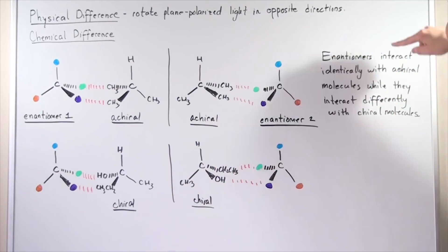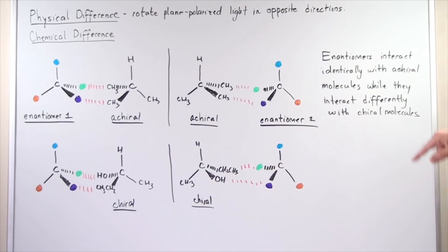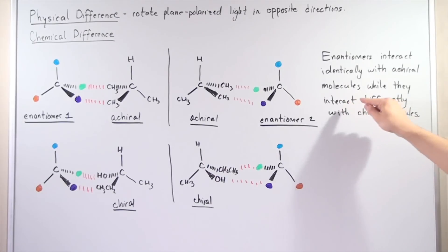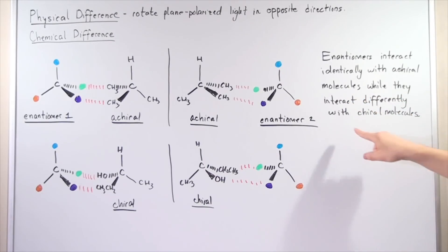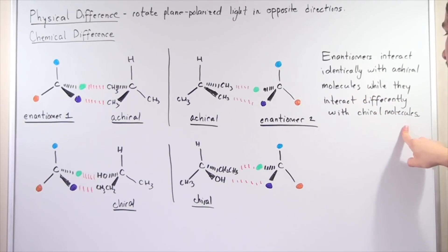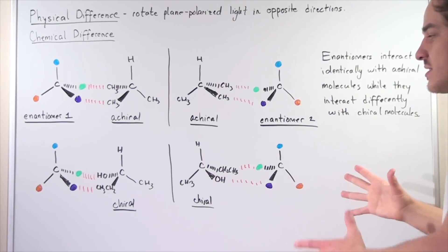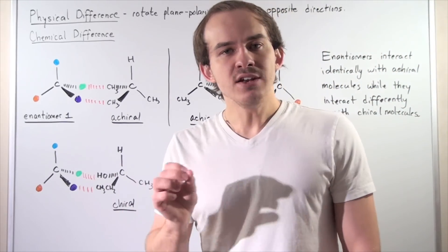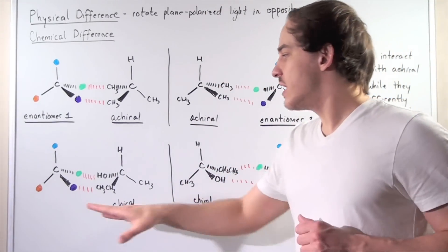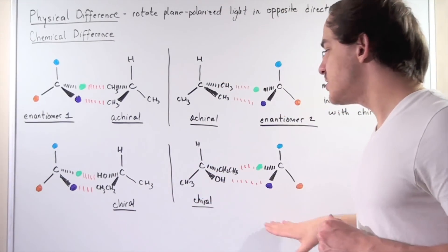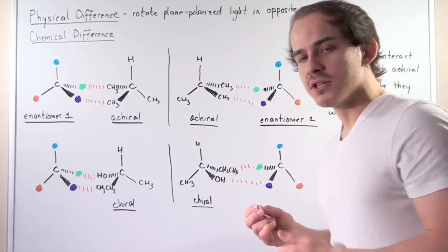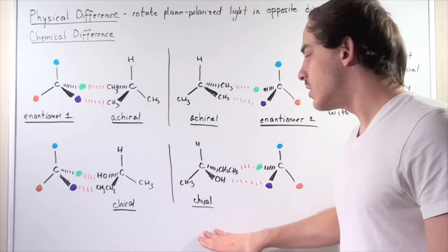So let's summarize: enantiomers interact identically with achiral molecules, while they interact differently with chiral molecules. And in fact, this is the basis of chiral resolution, in which you can separate the pair of enantiomers by the fact that they interact differently with chiral molecules.